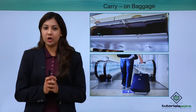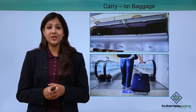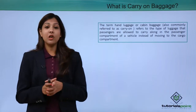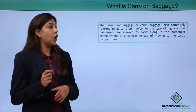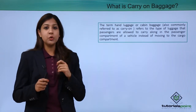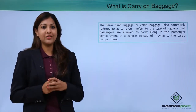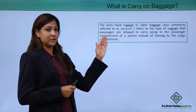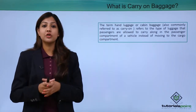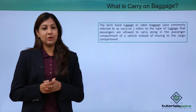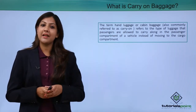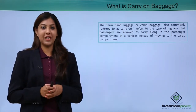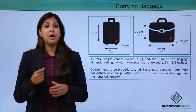What exactly is carry-on baggage? A carry-on baggage is also known as hand baggage or cabin baggage — terms used interchangeably. It is a type of luggage that passengers are allowed to carry inside the passenger cabin of a vehicle, instead of moving it to the cargo department. Carry-on baggage can be carried by passengers inside the cabin and does not have to be put inside the cargo hold of the aircraft.